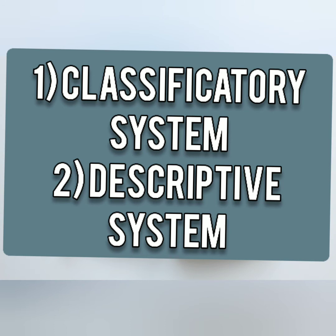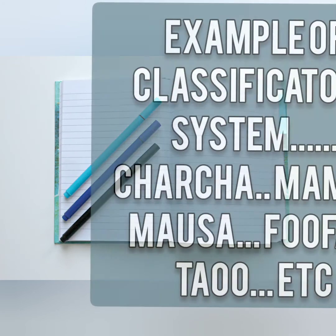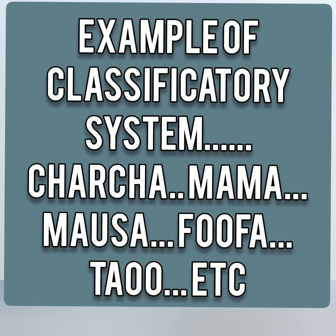Under the classificatory system of kinship, various kins are included in one category and all referred to by the same term. For example, the term 'uncle' is a classificatory term and it is used for chacha, mama, moosa, fufa, tau, etc. Thus, people of various age groups are designated by the same term.